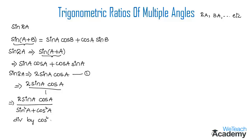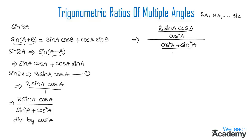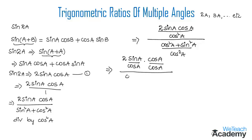Now we divide both the numerator and the denominator by cos²(a). In the numerator we get 2sin(a)cos(a) divided by cos²(a), and in the denominator we get sin²(a)/cos²(a) + cos²(a)/cos²(a). The cos(a) terms in the numerator cancel, and cos²(a)/cos²(a) in the denominator simplifies to 1.